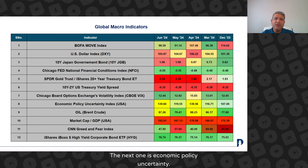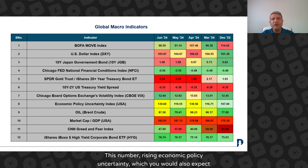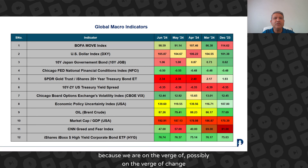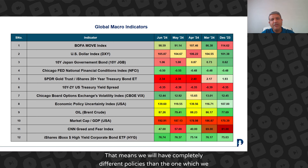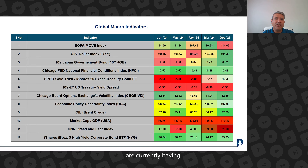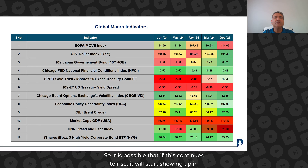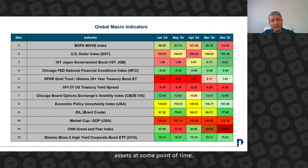The next one is economic policy uncertainty. Rising economic policy uncertainty is expected because we are possibly on the verge of a change in president in the United States. That means we will have completely different policy than the one we are currently having. Rising economic uncertainty is never good for assets. So it is possible that if this number continues to rise, it will start showing up in assets at some point.